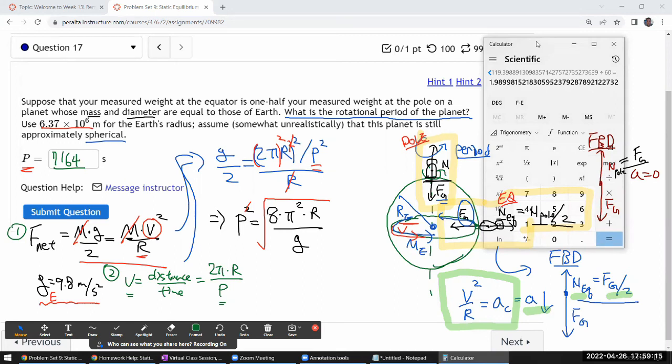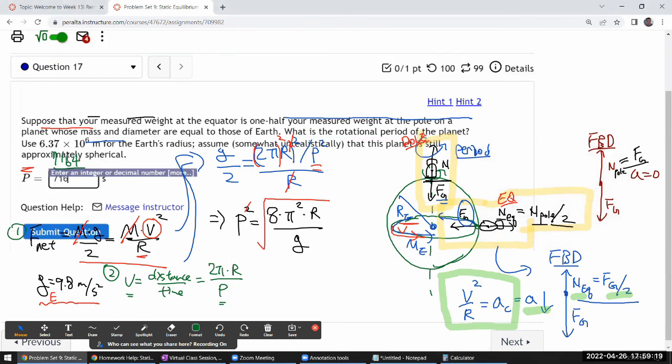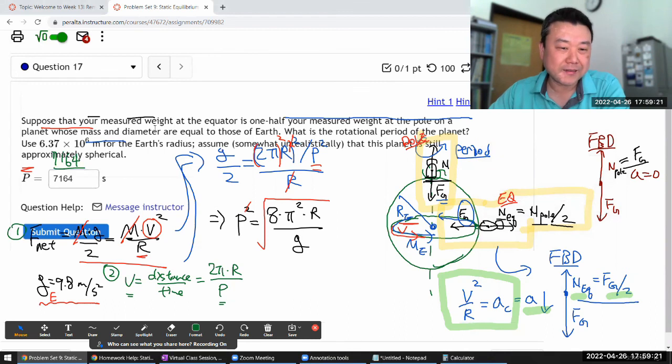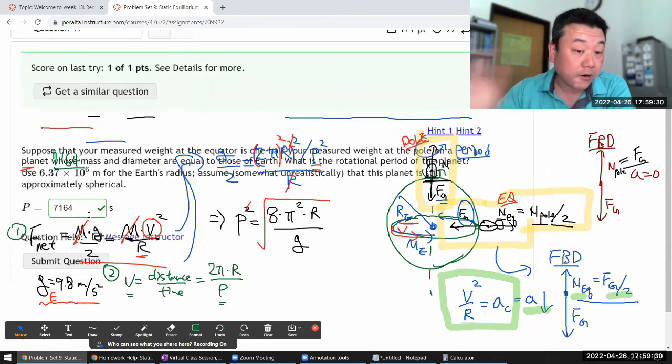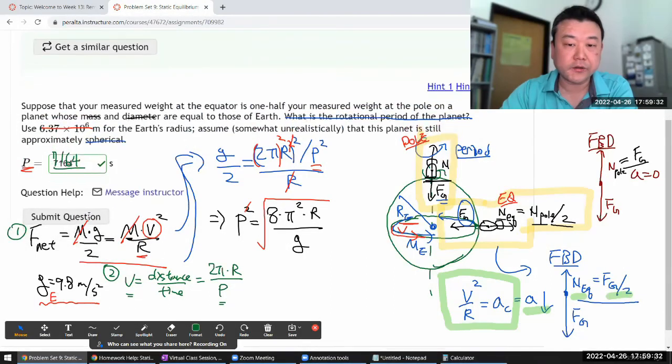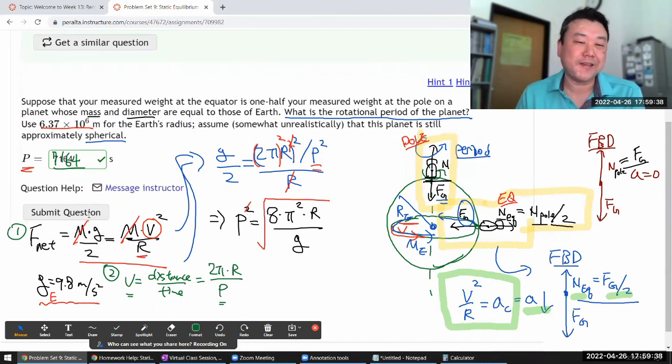Let's make sure my numbers are right: 7,164. I guess that goes to why the question thought somewhat unrealistically that the planet is approximately spherical. Earth is approximately spherical, but earth also spins at 10 times slower speed. Unless this planet is made up of a much sturdier material, it's definitely going to be more ellipsoidal shape, not quite as spherical.